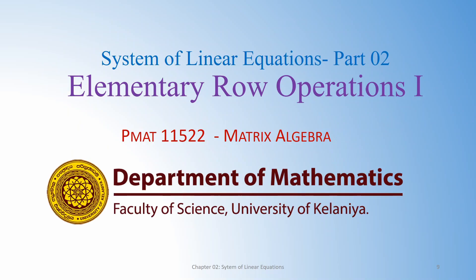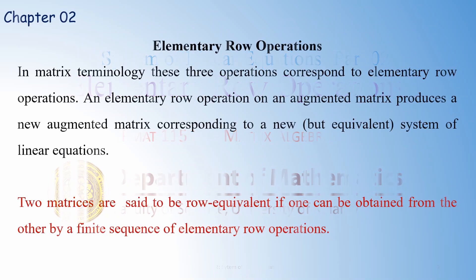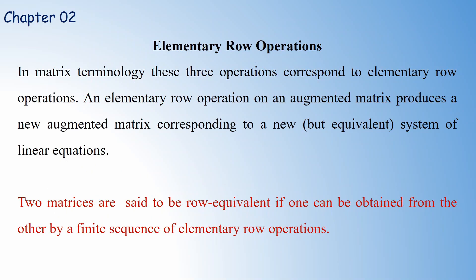Welcome to the second media lesson of System of Linear Equations under PMET 11522. Today we are going to discuss elementary row operations. In matrix algebra, there are three types of operations corresponding to elementary row operations. An elementary row operation on an augmented matrix produces a new augmented matrix corresponding to a new but equivalent system of linear equations.